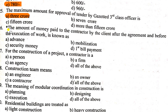Question number 26: The amount of money paid to the contractor by the client after the agreement and before the execution of work is known as mobilization money. Mobilization money is that amount which is paid to the contractor by the owner or client after the agreement is done but before the execution of the work starts.